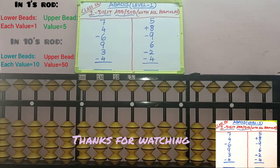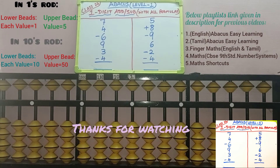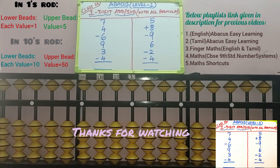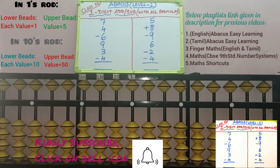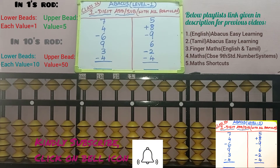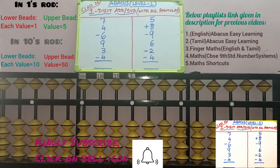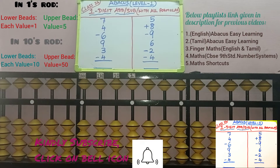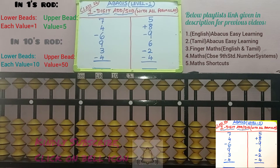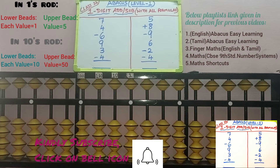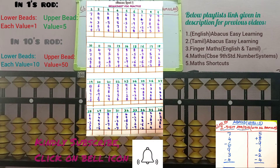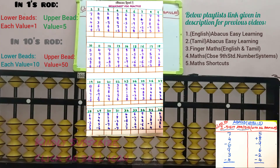Hello friends, we are in level 1 class 24 in Abacus. Here we will do addition and subtraction problems using all formulas — that is small friend, big friend, and combination formulas. We have already seen each and every formula in separate videos. If you want to see the videos from level 1 class 1, please check the playlist link in description as English Abacus Easy Learning. I am going to explain 2 problems here and also attach sums for your practice in the description box.